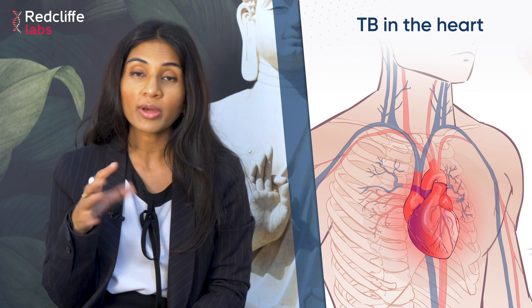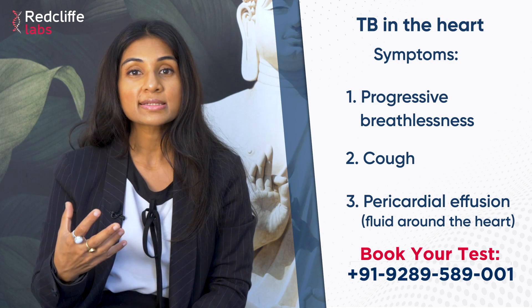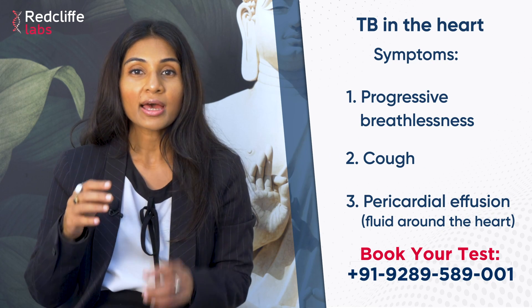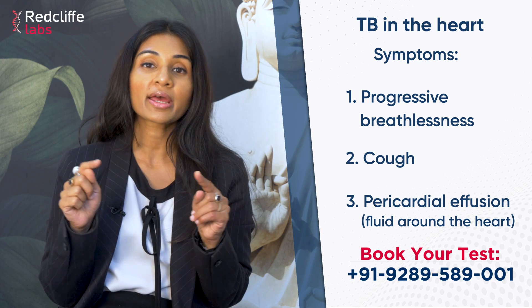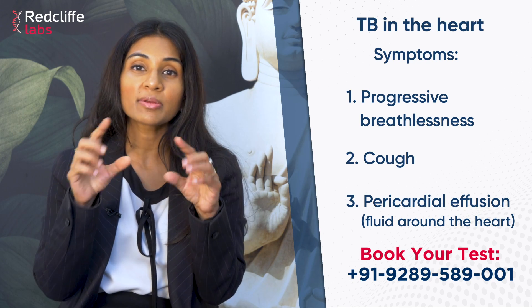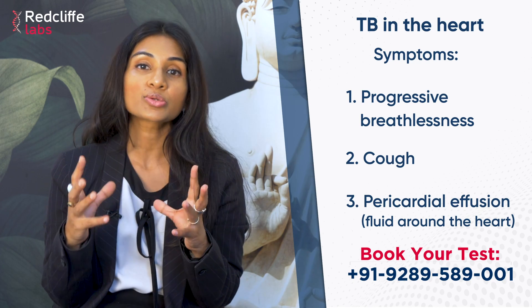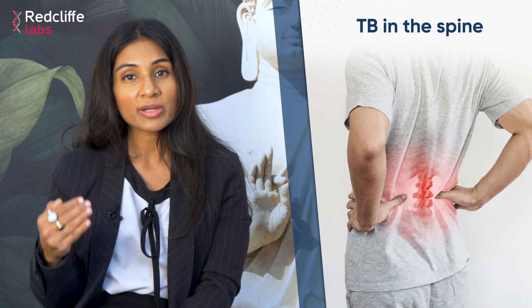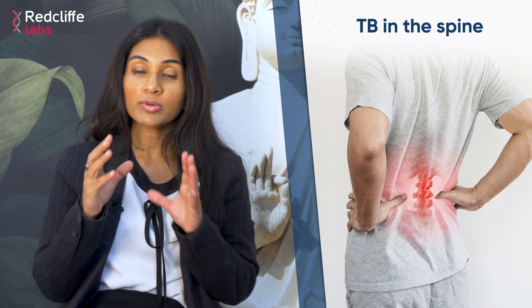TB can affect the eye, where sometimes there can be loss of vision. It can also affect the heart, where the person can present with progressive breathlessness and cough, and on examination or X-ray there will be fluid around the heart, which is known as pericardial effusion.